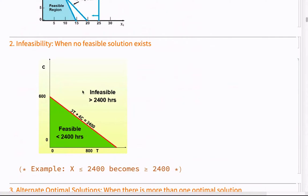A line is an infinite amount of points defined as long as we have two points. These two points are the ones we put on the axis — we know when x is zero and y has a value, and when y is zero and x has a value. These two points define a line; a line goes further up and down.